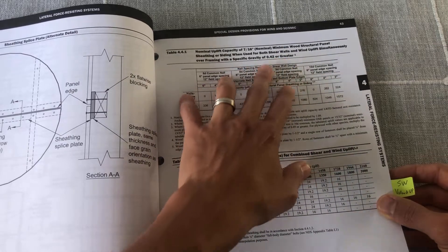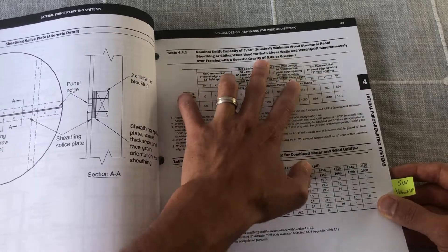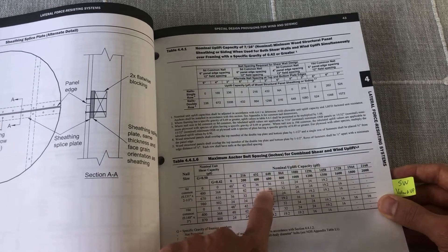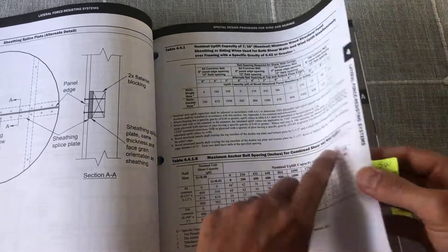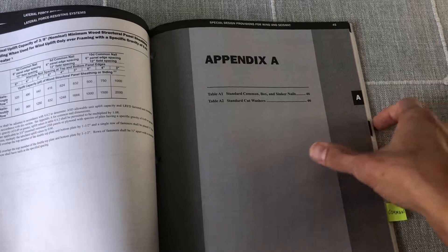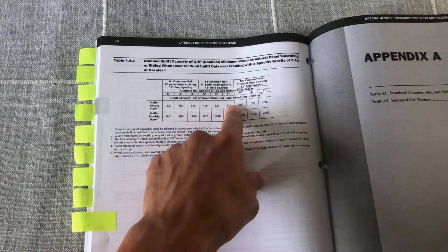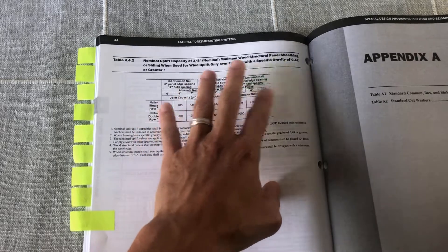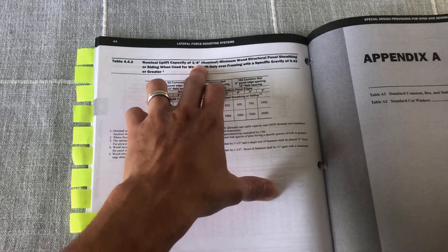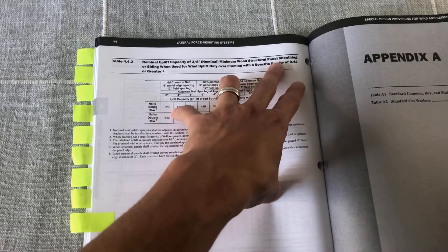And then it gives you requirements on the specific gravity. You have that table. You have this table here for bolt spacing for combined shear and uplift. And then I believe you have one last table here, also for combined shear and uplift. In this case for 3/8 nominal wood structural panel.